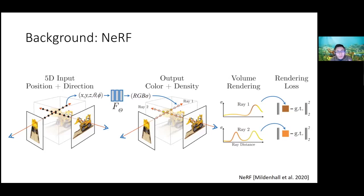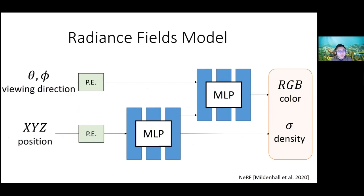Zooming in on the model structure: the neural radiance field takes XYZ location and viewing direction as input. The green box shows the positional encoding process — the low-dimensional input is mapped to sinusoidal features at different frequencies, which helps the network learn high-frequency components of the output. This is a static model with no time involved. So the question becomes: how do we change this to enable dynamic things? What if from frame to frame the scene changes — objects moving, new objects entering, and so on?